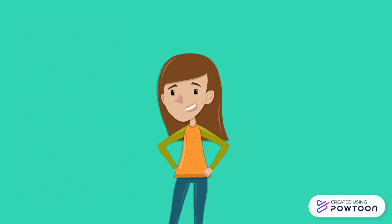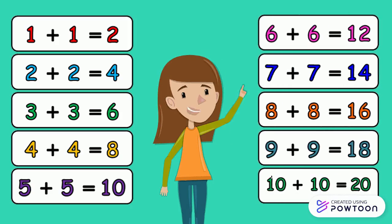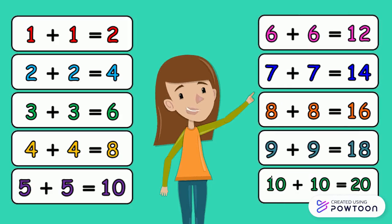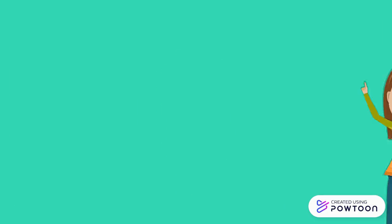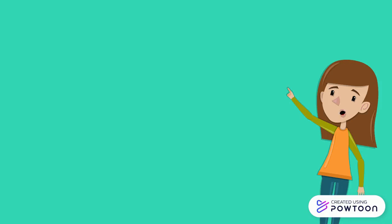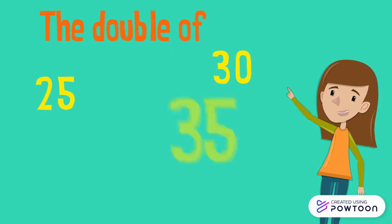To know how to find the double of big numbers, we should memorize the doubles of the numbers from 1 to 10. Now we are going to find the double of the following numbers: 30, 25, 35, and 48.